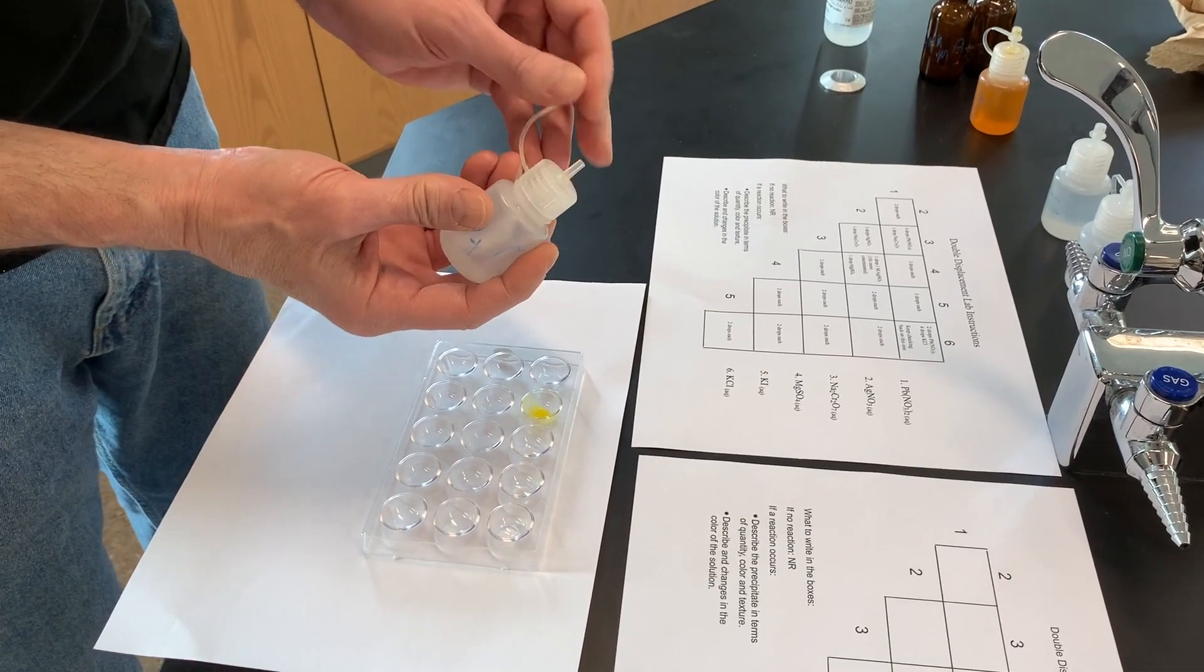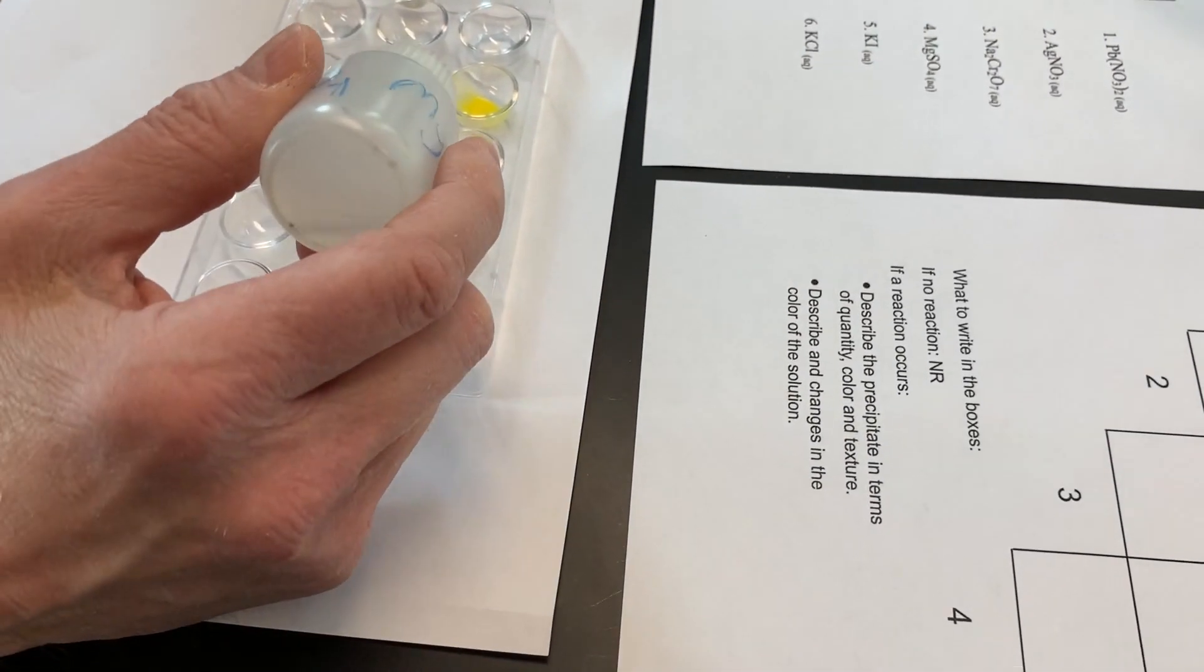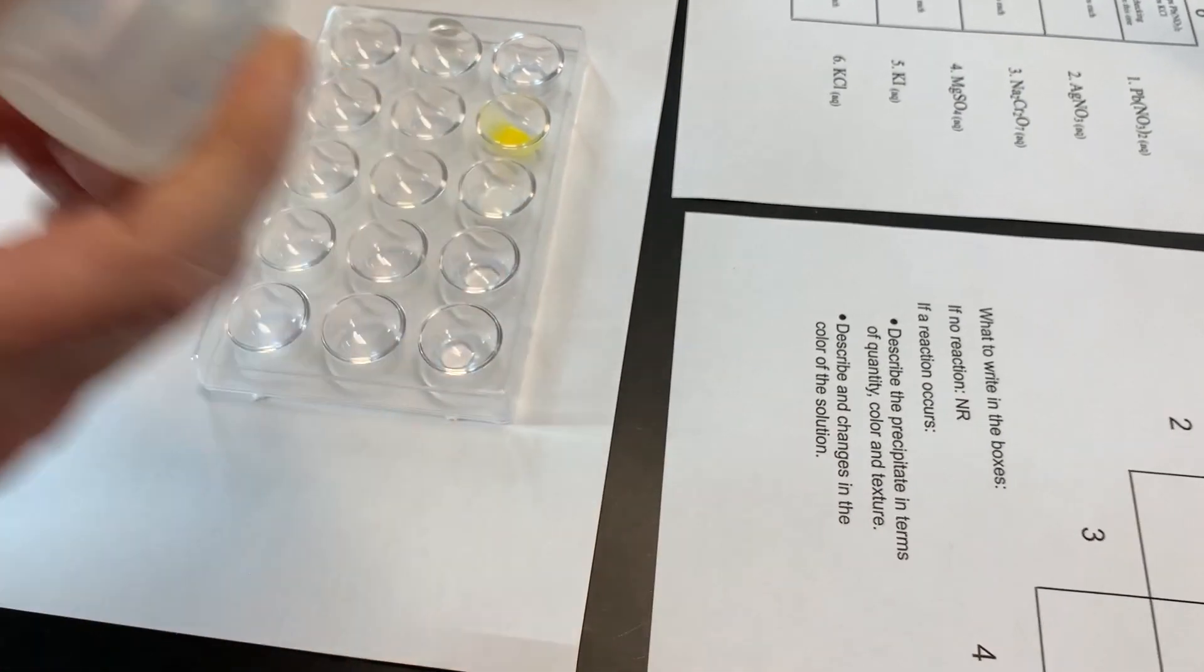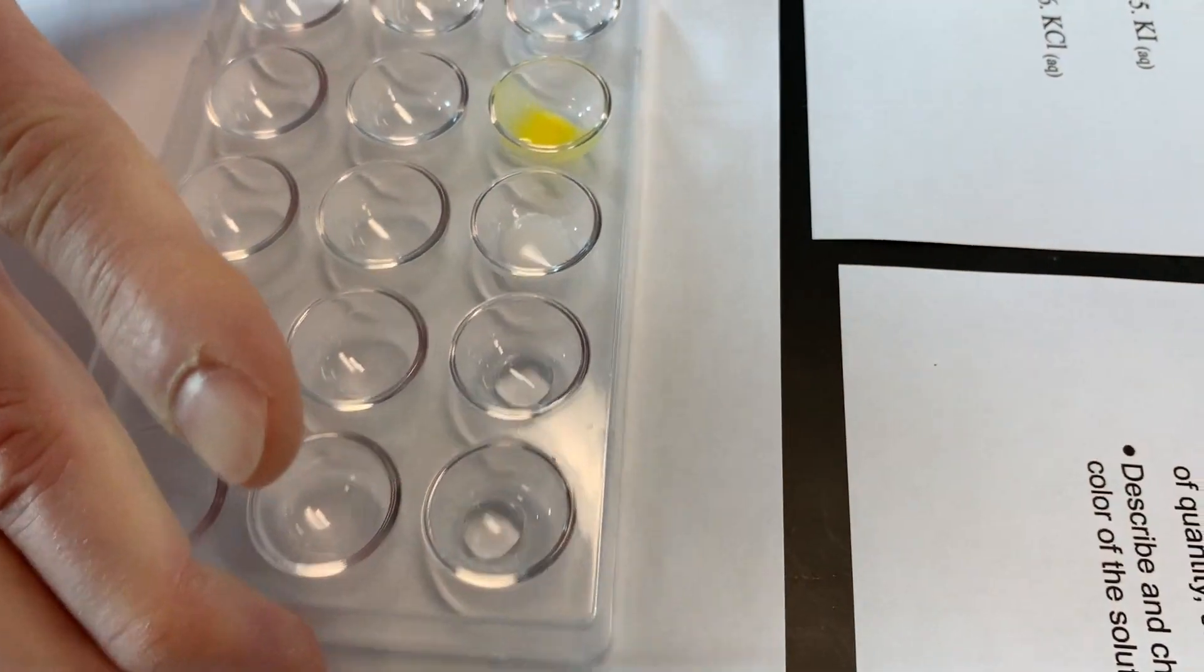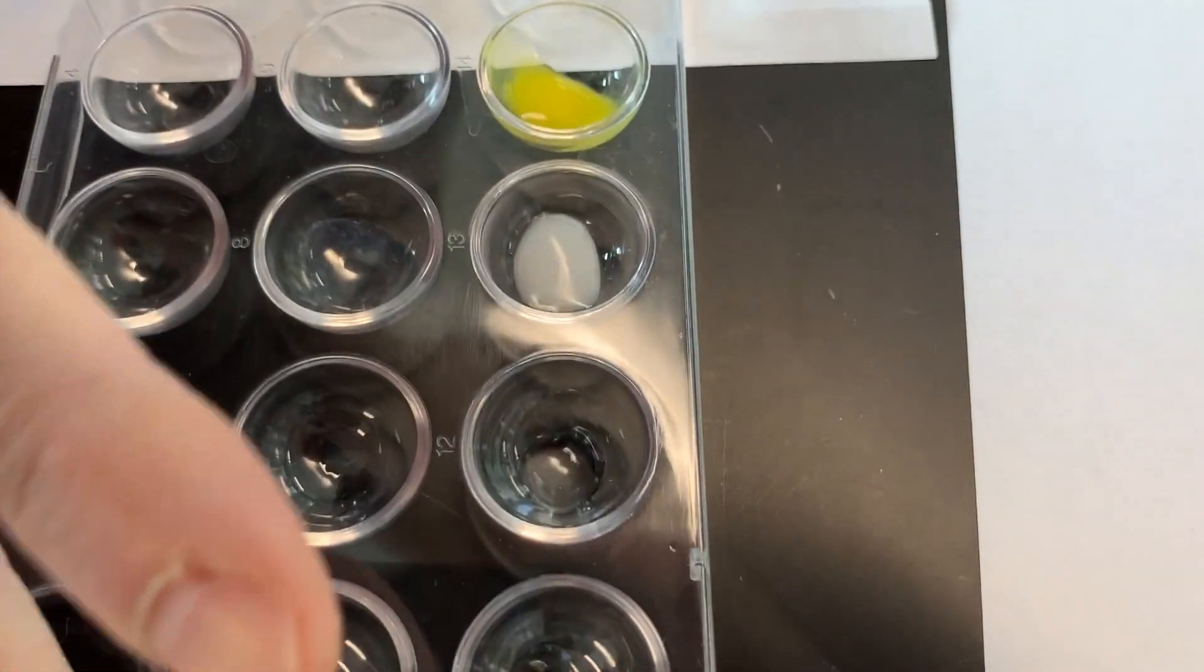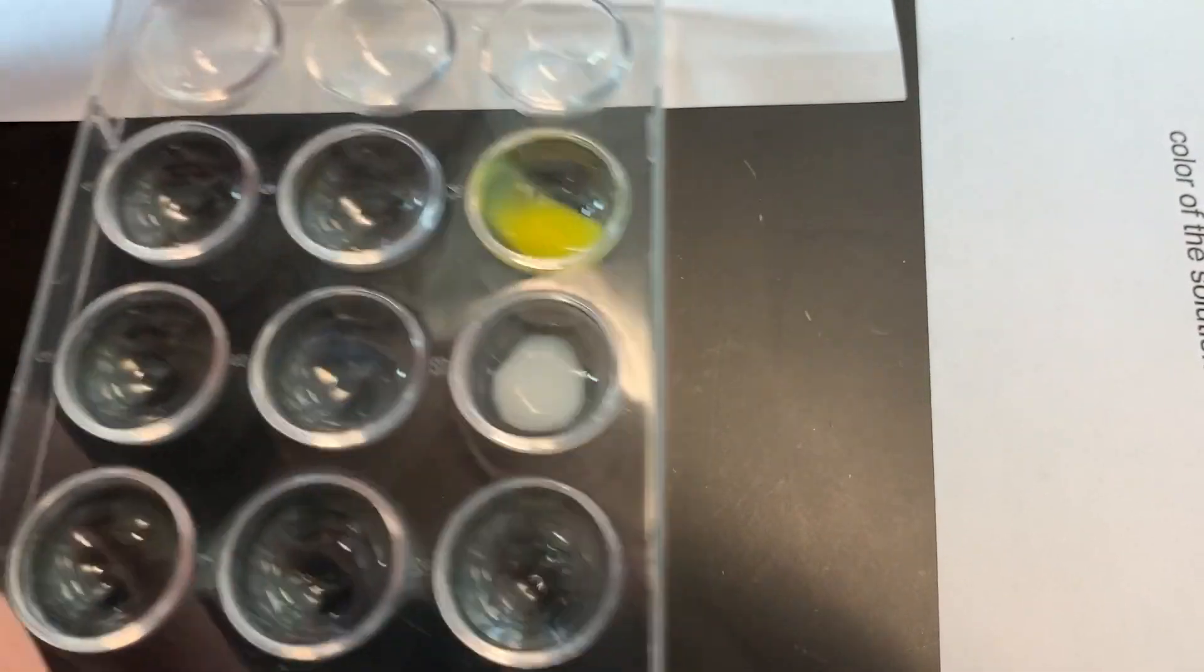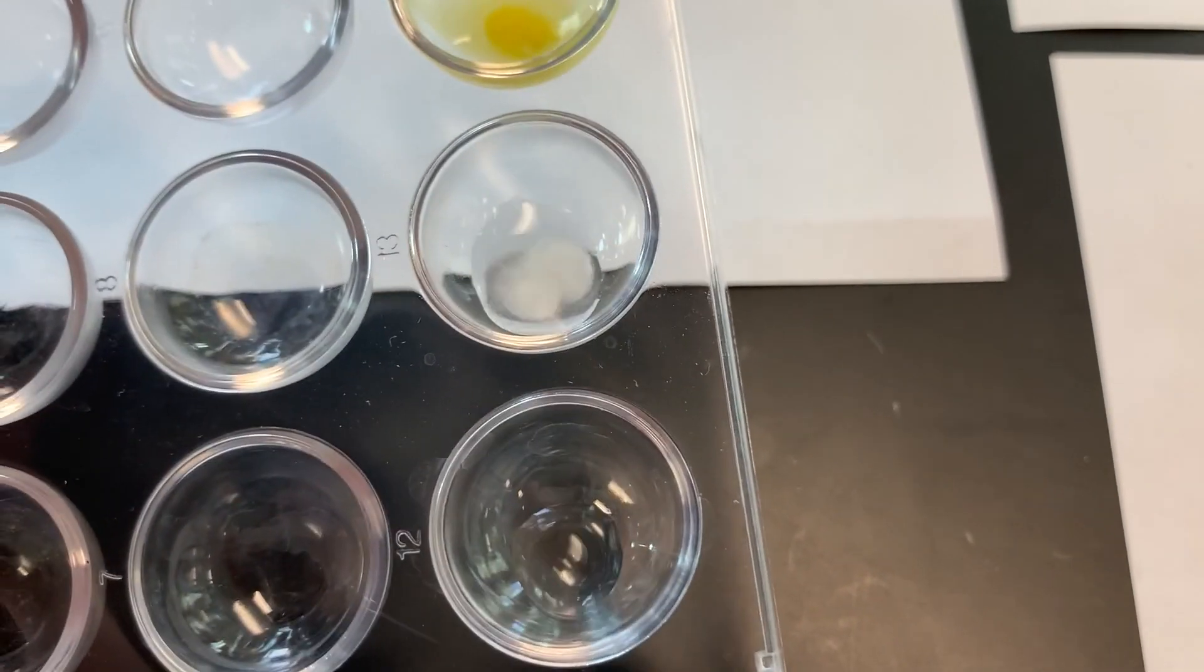Okay, so for magnesium sulfate, we're going to take three drops. Looks like some white precipitate. The liquid's definitely colorless.